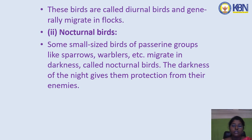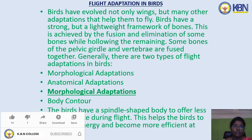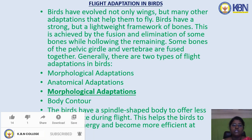Some small-sized birds of passerine groups like sparrows and warblers migrate in darkness and are called nocturnal birds. The darkness of the night gives them protection from their enemies. Next topic: flight adaptations in birds. Birds have evolved not only wings but many other adaptations that help them to fly.